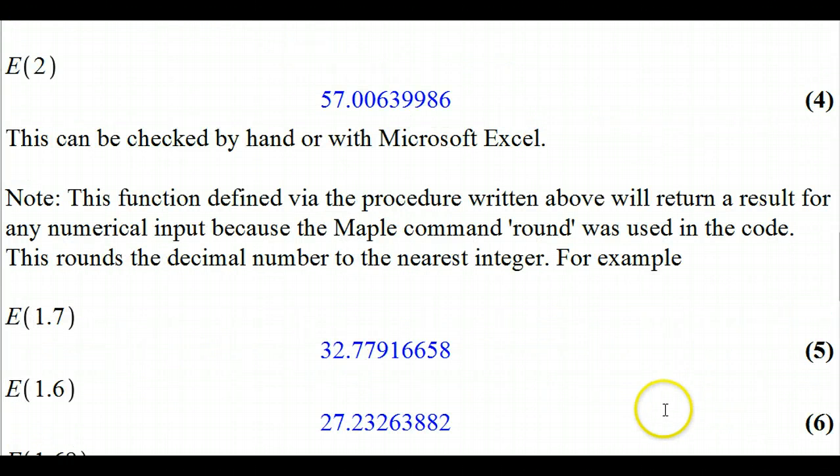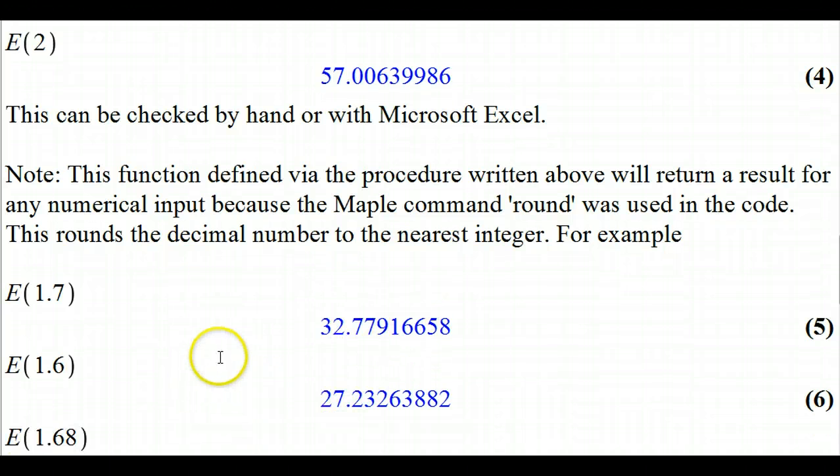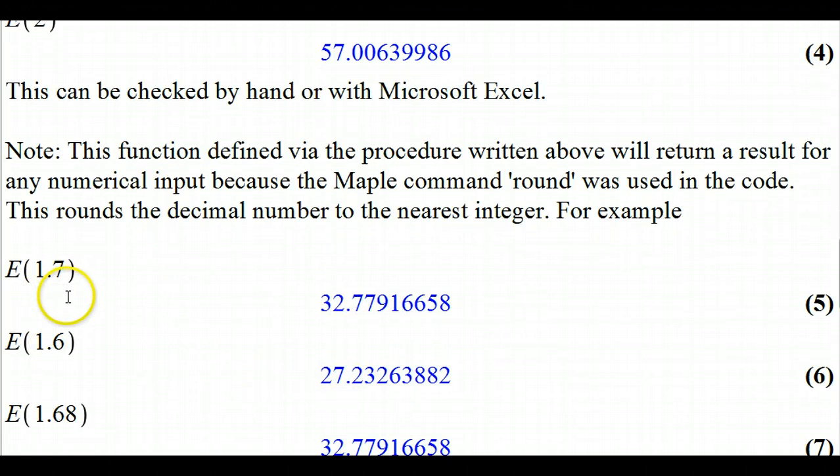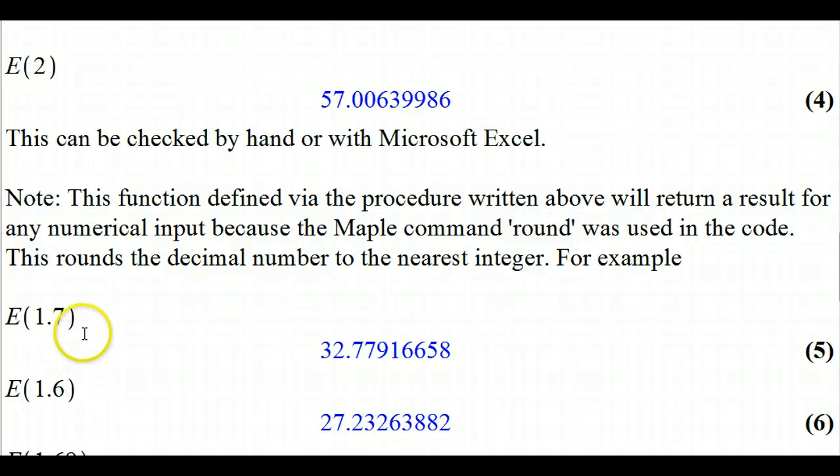And also the rounding feature, what that will do for you: this is going to be defined for any value you can plug in there. But it's only going to compute and use Euler's method when you're an exact certain number of steps away from the initial time. So if your step size is 0.1, you're starting at 0, then you're going to go to 0.1, 0.2, 0.3, eventually up to 1.7 or 1.6, and these are the values you would get.